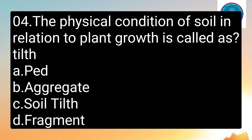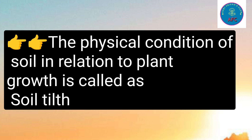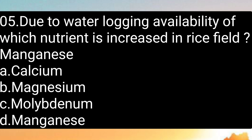Moving on to the next question: The physical condition of the soil in relation to plant growth is called as — the options are Ped, Aggregate, Soil tilth, or Fragment. The correct answer is soil tilth. The physical condition of the soil in relation to plant growth is known as soil tilth.